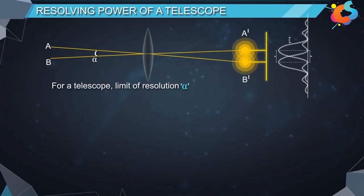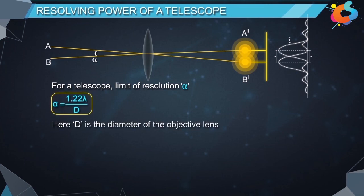For a telescope, limit of resolution alpha is given by alpha is equal to 1.22 lambda divided by d. Here d is the diameter of the objective lens.